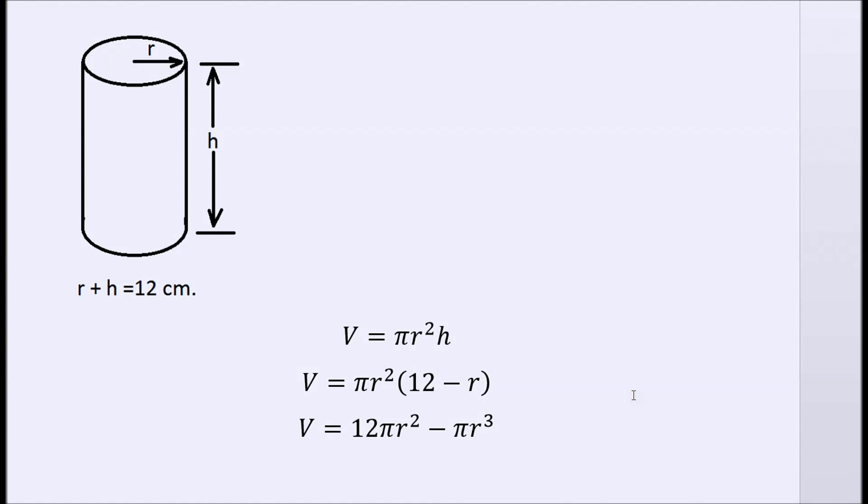Now I like students to kind of look at a function and try and visualize what it would look like. Of course r can't be negative. You can't have a negative radius and r can't go past 12. But let's look at the first term. The first term goes up quadratically with r, and it's 12 pi r squared.